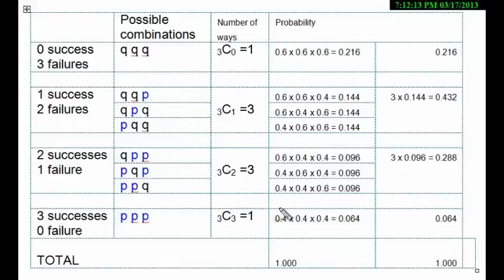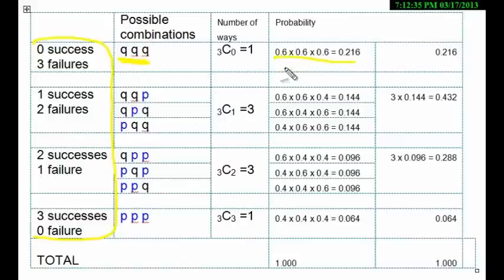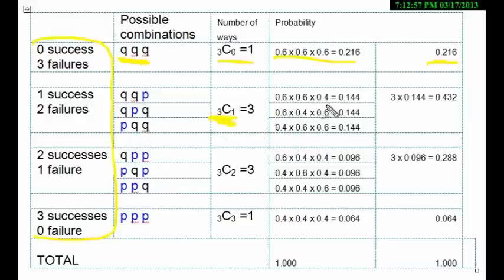Let's say I forget the formula for binomial distribution. Can I still solve this problem without using the formula? My answer is yes. Those are the possible cases. First case: 0 successes, 3 failures — Q, Q, Q. Since Q is 0.6, we get 0.6 × 0.6 × 0.6. Basically 3 choose 0. Another case: 1 success, 2 failures. As you can see, blue is the success, but only the order is different. So 3 choose 1, and we get 0.6 × 0.6 × 0.4. We get 0.144 and there are 3 such arrangements.